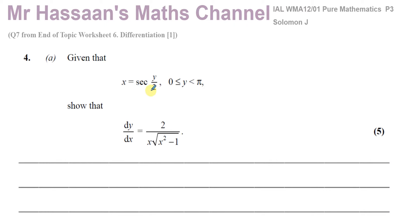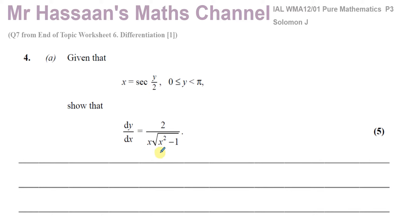We're told that x equals the secant of the angle y over 2 and the angle y is between 0 and pi. We're told to show that dy/dx is equal to 2 over x times the square root of x squared minus 1. Basically we have to differentiate this and find dy/dx, leaving our answer in terms of x — no y in the answer.